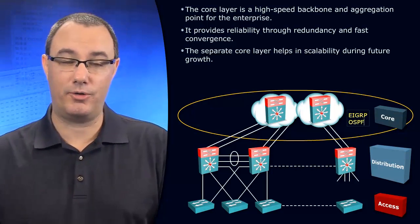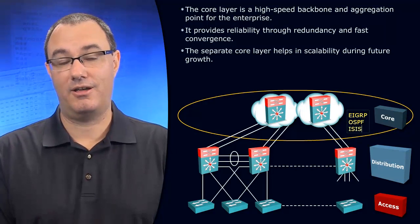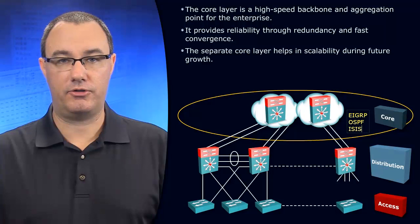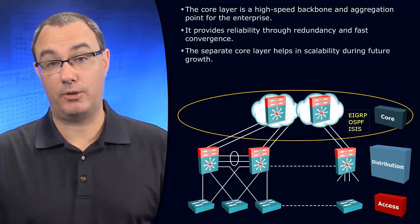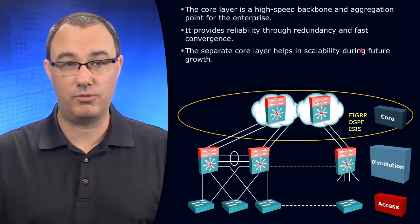Those are the big two choices, and hopefully you don't have anything other than those two, or maybe ISIS. And if you run BGP, you're probably doing it for a very specific reason. But we don't want to run things like RIP here because its convergence time is not satisfactory to our needs.